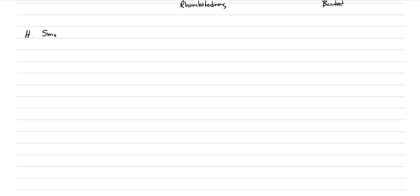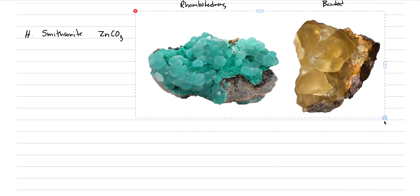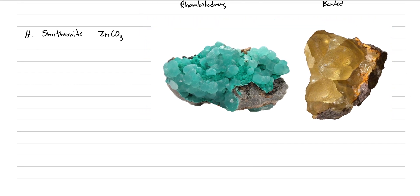Next is smithsonite, named after the same guy as the Smithsonian. This is a zinc carbonate and it's a beautiful mineral sometimes. Actually, most of the time it's kind of a brownish, ugly color, maybe a bit of yellow. The mineralogy of smithsonite is that you can recognize it because it is botryoidal. It is commonly brown.